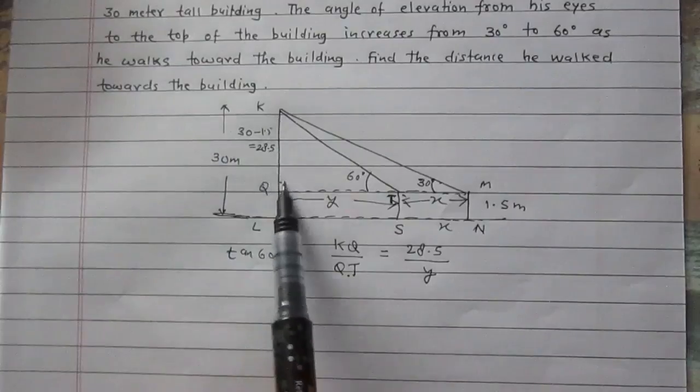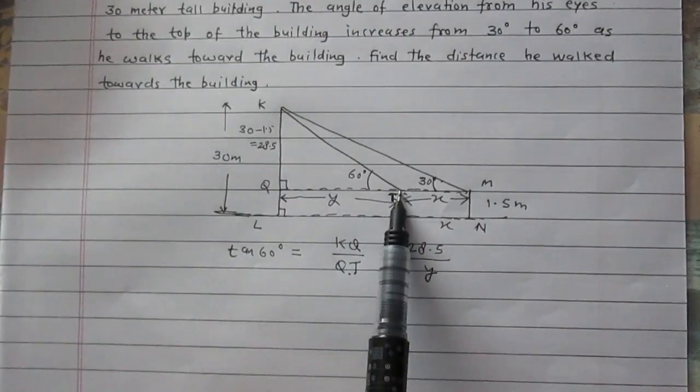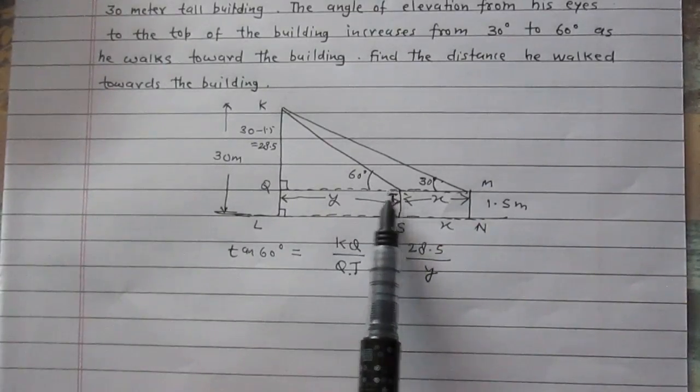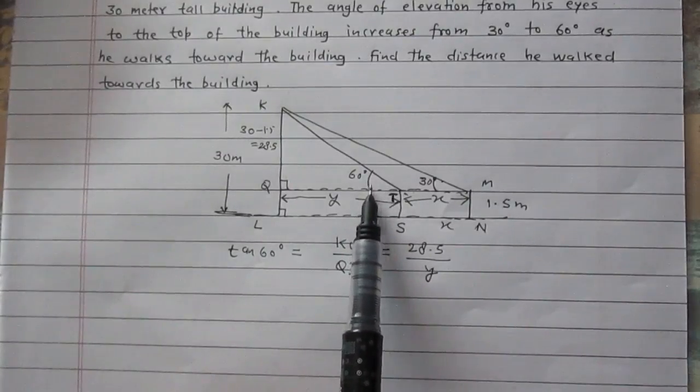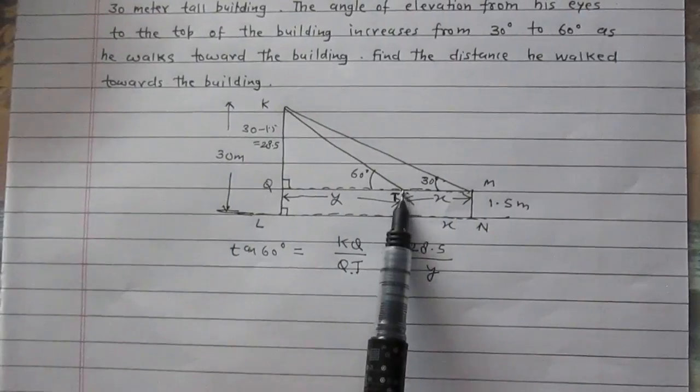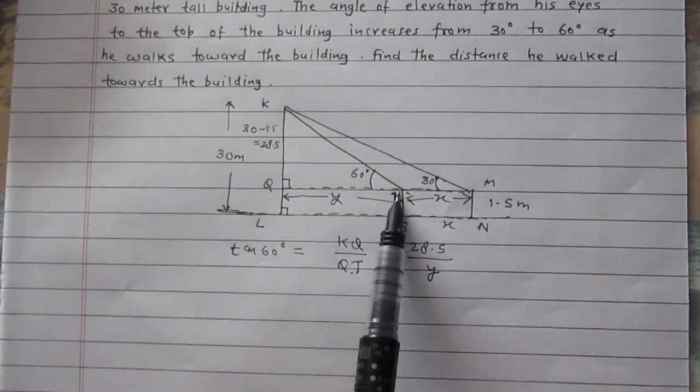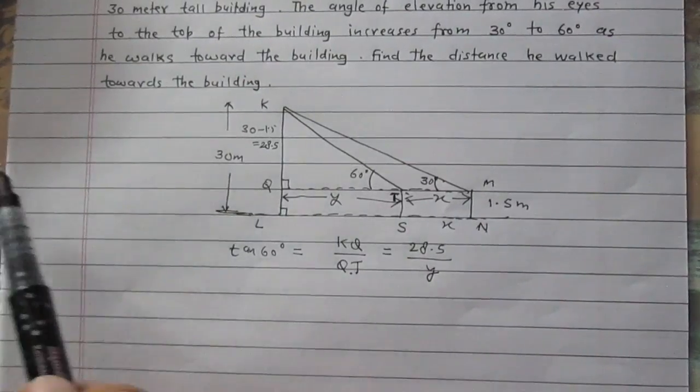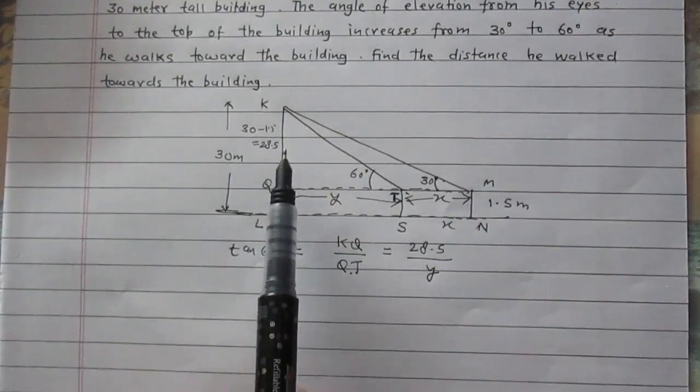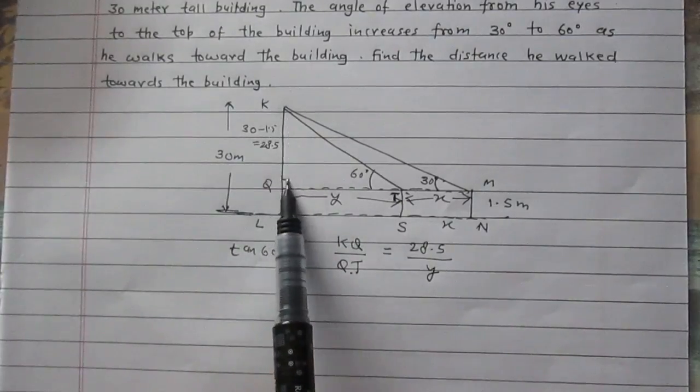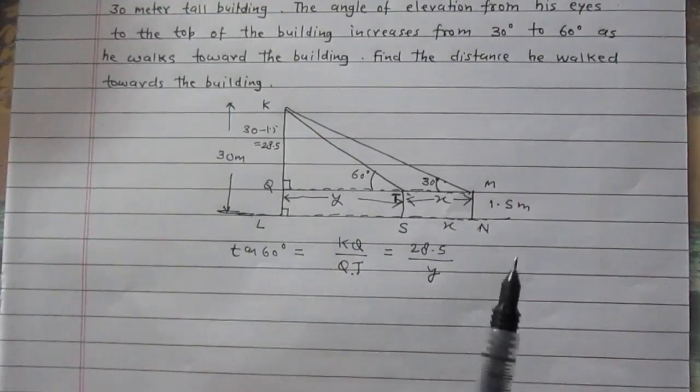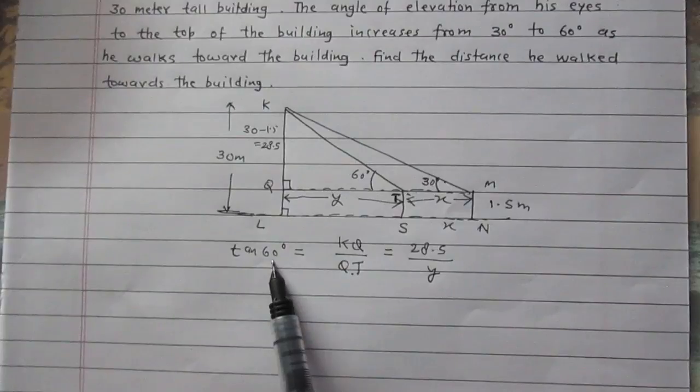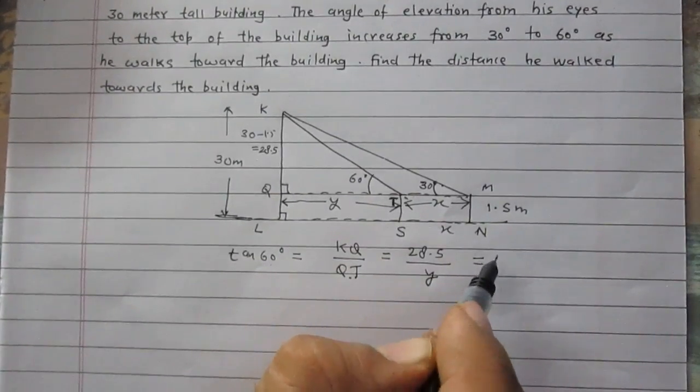KQ is 28.5 and QT we have considered it as Y. And KQ as perpendicular because tan theta is perpendicular upon base. Because you see in KQT, KT is the longest side so it is hypotenuse. QT is making the angle under consideration with hypotenuse, so QT I can consider as the base for this angle of 60 degrees. KQ is just opposite to this angle so KQ is perpendicular. So perpendicular KQ upon base QT is tan theta. Theta is the angle under consideration, this is 60 degrees.